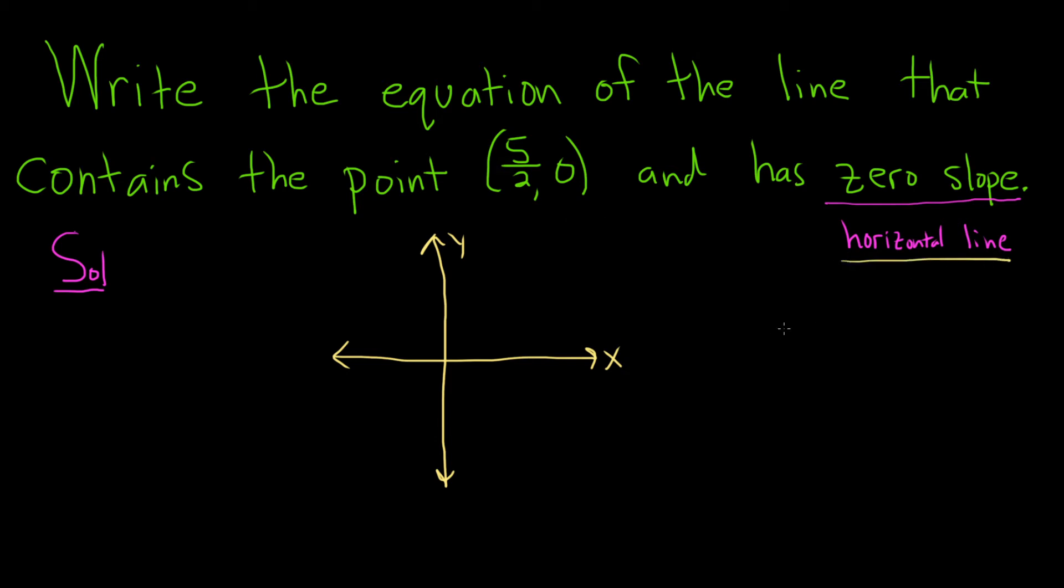So we know it's a horizontal line and we know it passes through this point. So this point is going to be 5 halves to the right from the origin. So 5 halves, by the way, is 2.5. So you can think of it as 2.5 comma 0.